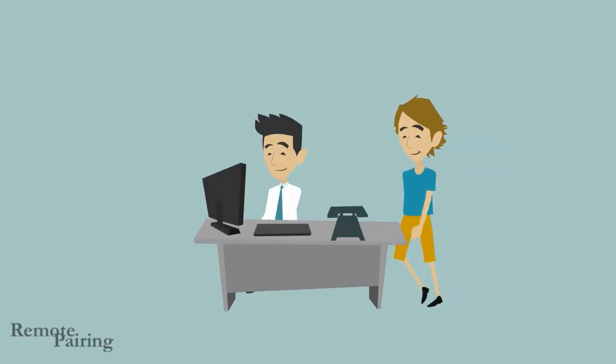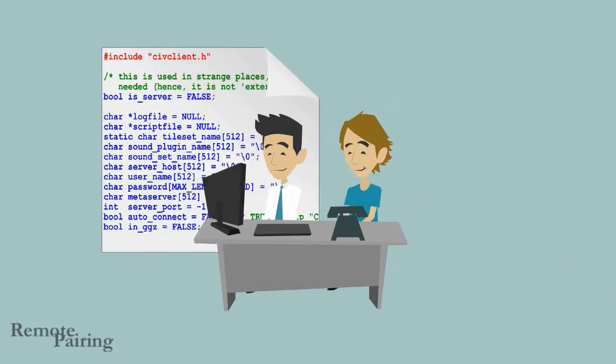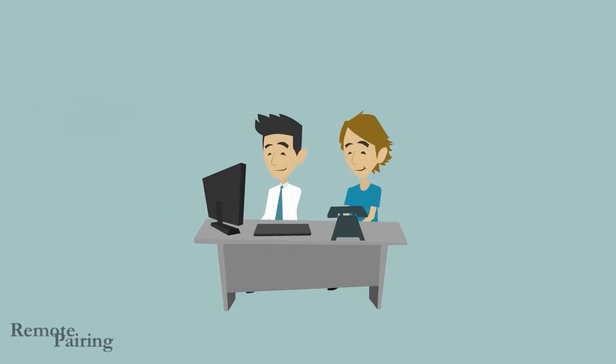In the mid-1990s, a software team at the Chrysler Corporation started using a new technique in their development process called pair programming. Nearly every piece of code that the team produced was the product of two programmers working on the same artifact at the same time.